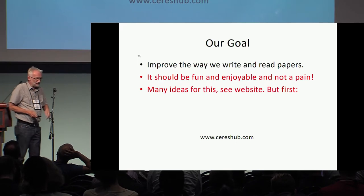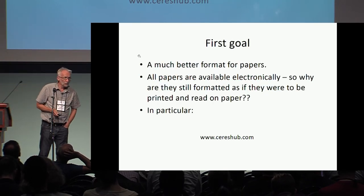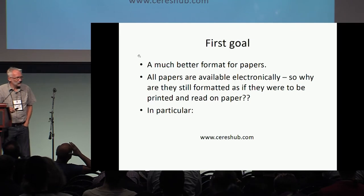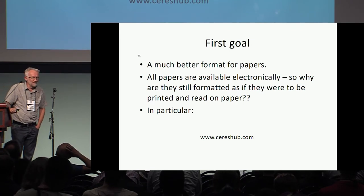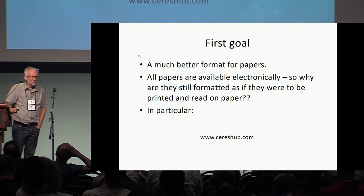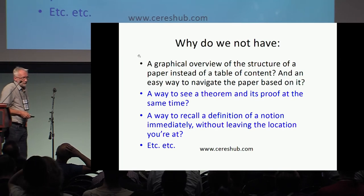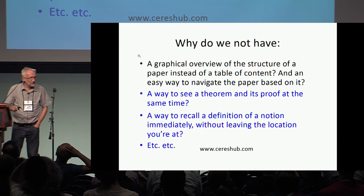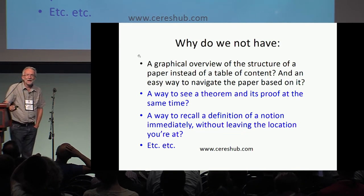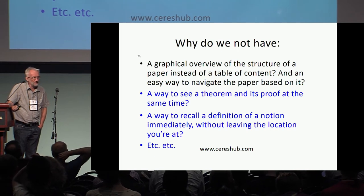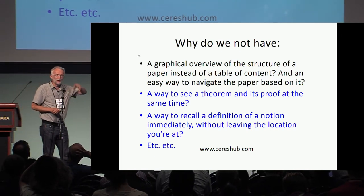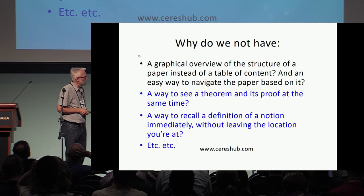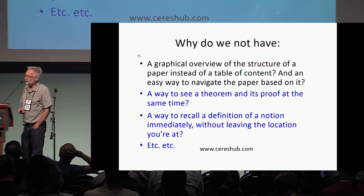We have ideas for this, and you can see the website. But first — surprise, surprise — the first goal: there should be a better format for papers, we think. All our papers are available electronically, so why on earth are they still formatted as if they were to be printed and read on paper? It doesn't make any sense. In particular, why can't we have a graphical overview of the structure of a paper — which sections depend on which other sections — instead of just a table of contents? Why can't we navigate a paper based on a graphical interface? Why can't I pin a theorem to the top of the screen and see the proof at the same time? Why can't I recall the definition of a notion easily without changing the location in the paper? All this should be possible, obviously. Why isn't it possible?